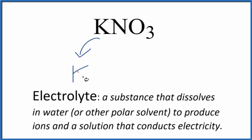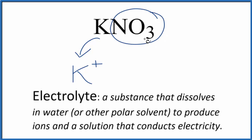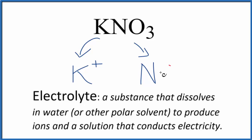We'll get the potassium ion — potassium is in group one, so that'll be 1+. And then we get the nitrate ion, NO₃⁻, with a charge of 1−. That's one you really just need to remember. So we have these two ions in water.